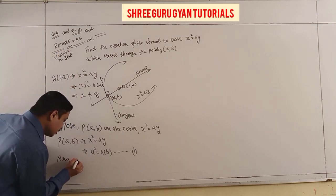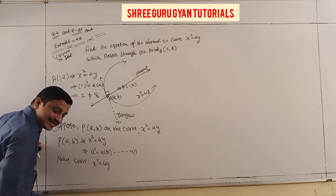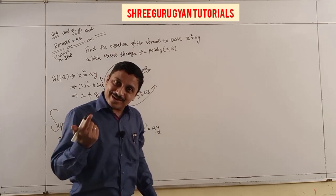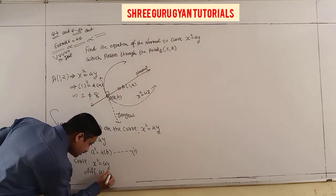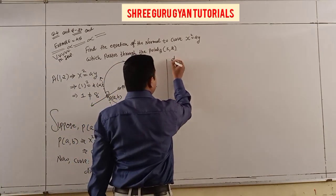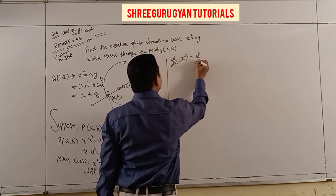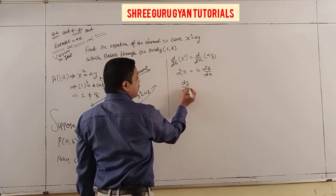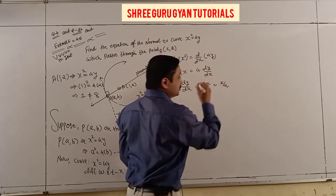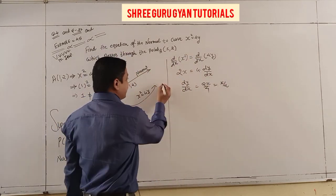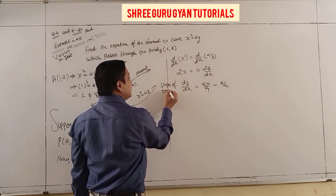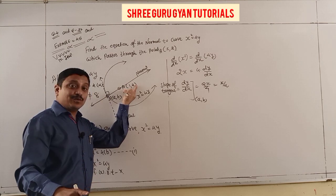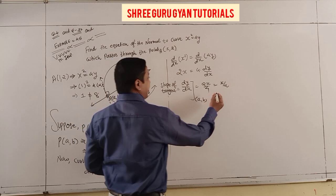Differentiating the given curve x² = 4y with respect to x: 2x = 4·(dy/dx), so dy/dx = x/2. This gives the slope of tangent. At point P(a, b) on the curve, slope of tangent = a/2.